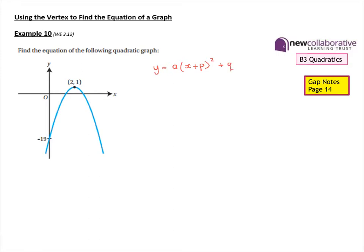In this example, the vertex of the graph is (2, 1), so we can immediately see that p must be negative 2 and q must be 1.